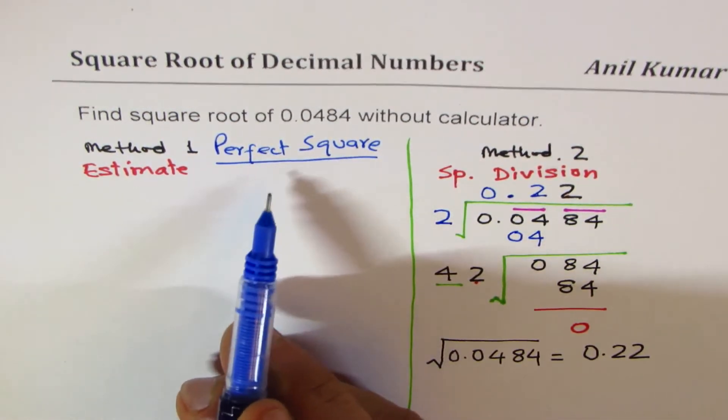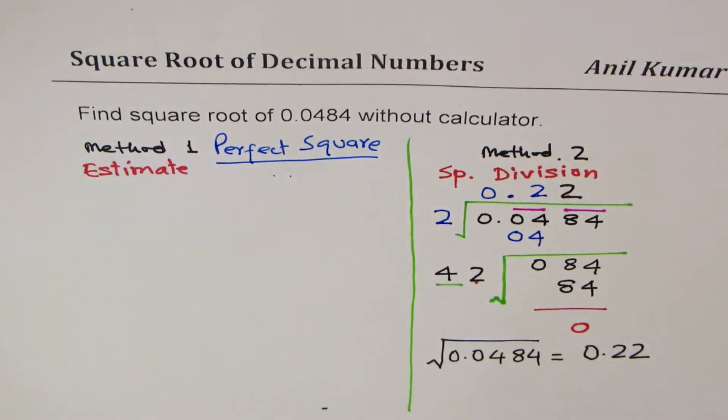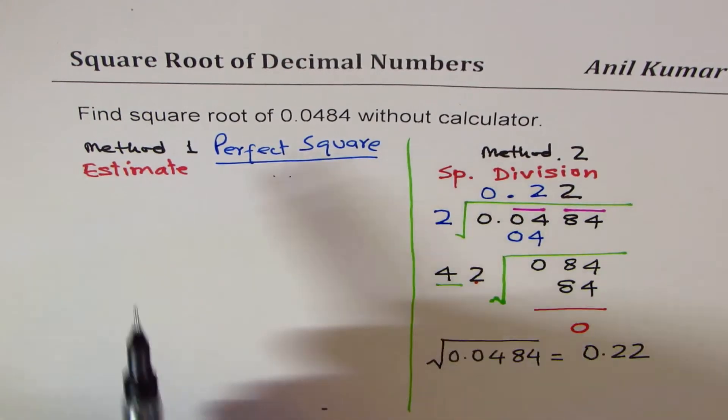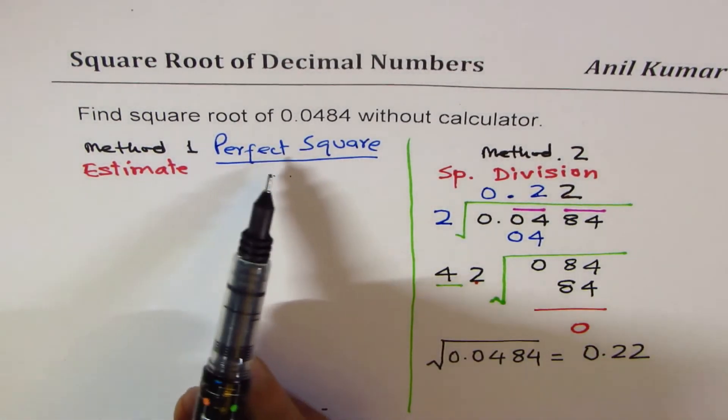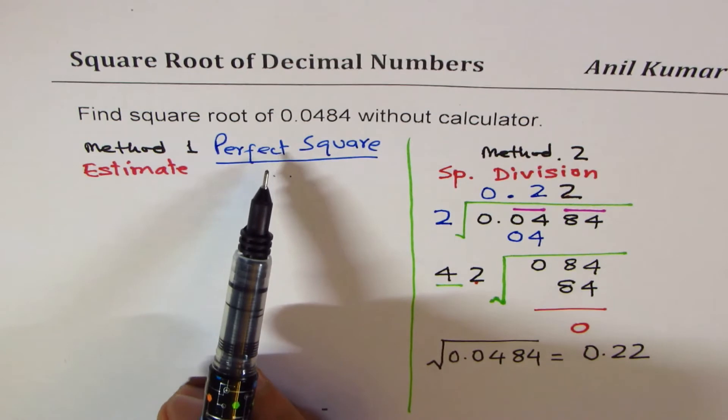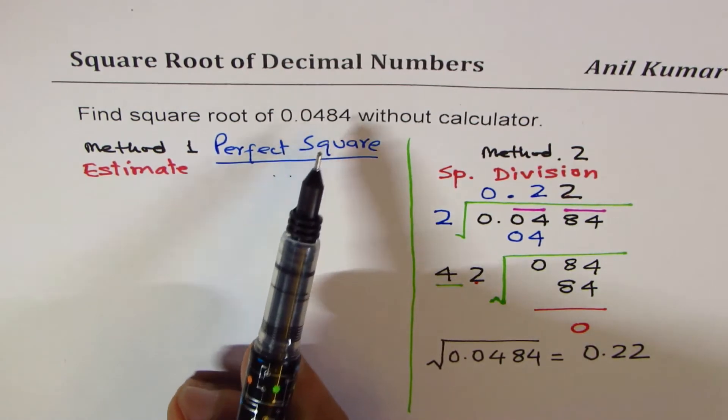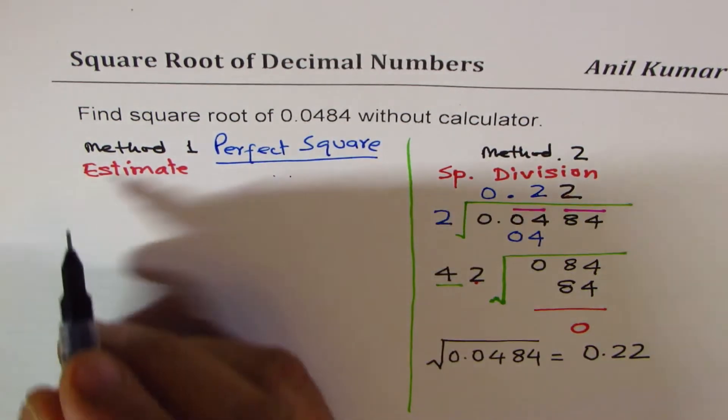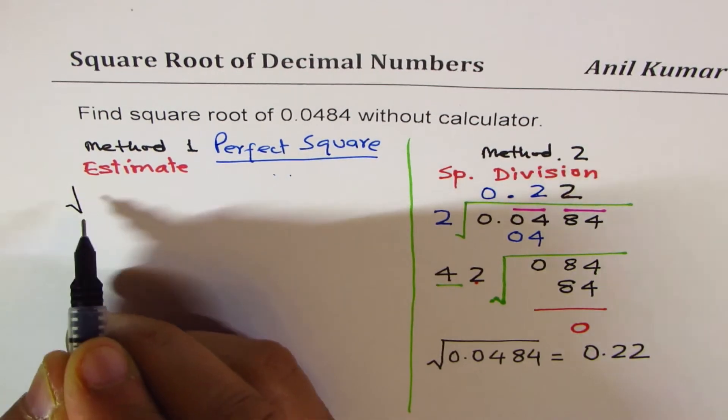I have other videos on perfect squares. I'll provide you a link for those videos. We have three different ways of finding square root without using calculator. Let's work out on the estimate side now. We know it's a perfect square, so I'll touch upon the perfect square method.